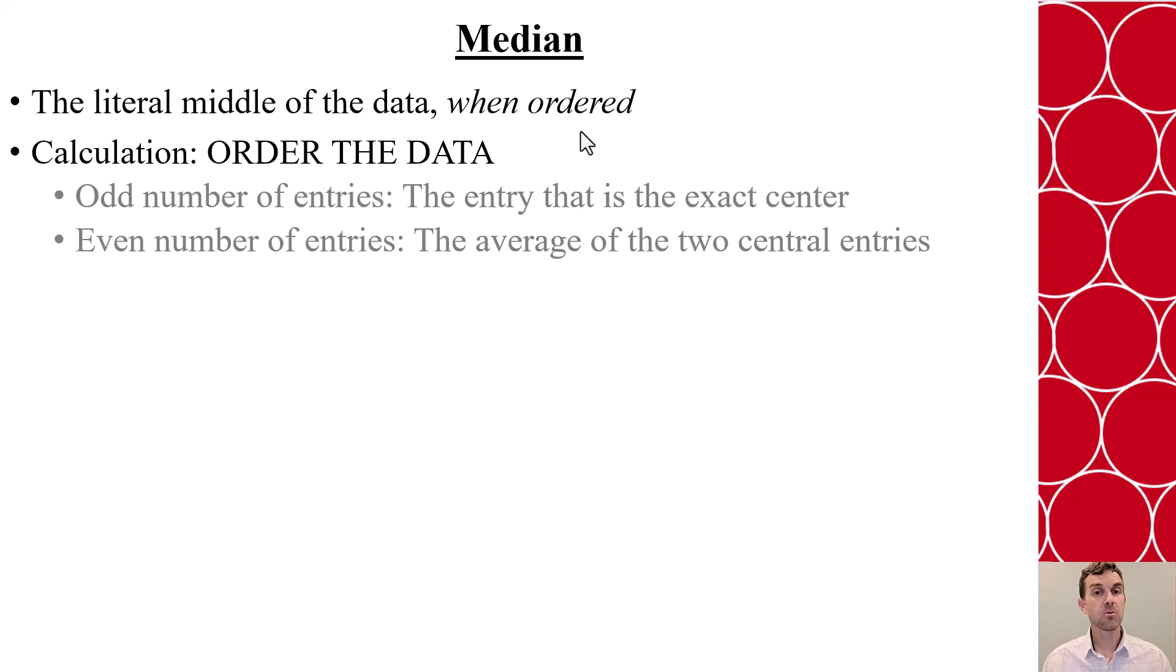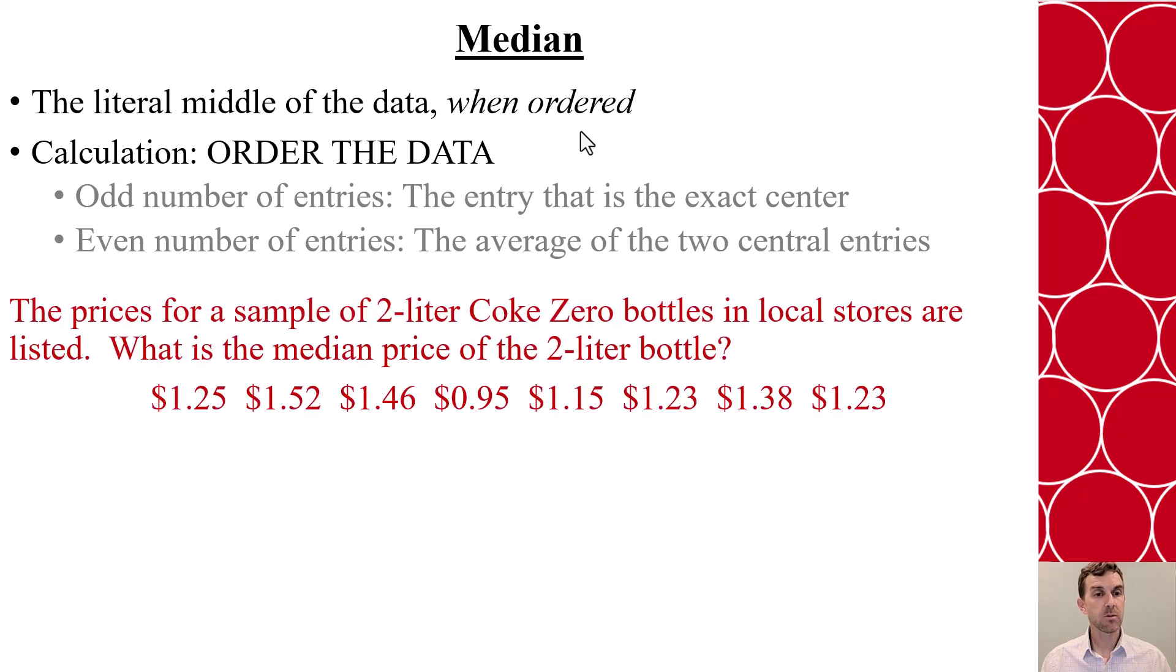Once the data is ordered, we can then determine is there an odd number or an even number of entries. If it's odd, it will be a literal entry from the set, the exact center. If it's even, we have to average the two most central values. So the median is not a value in the set; it's the average of two of them.